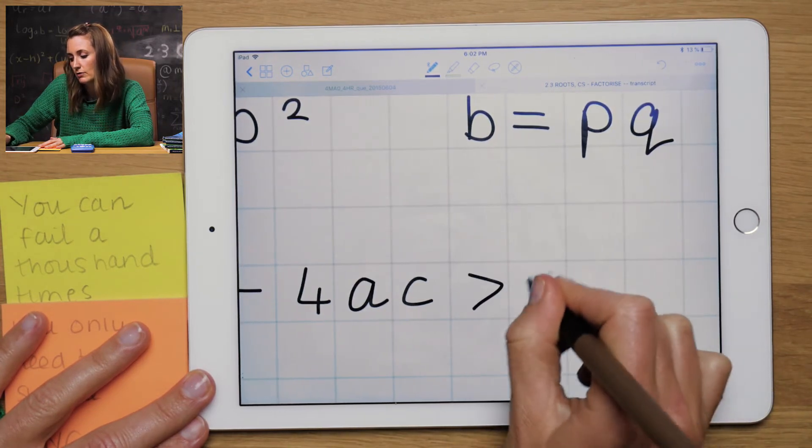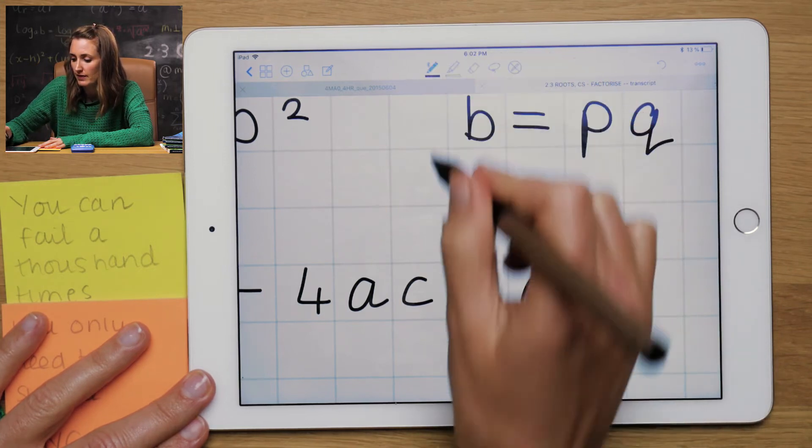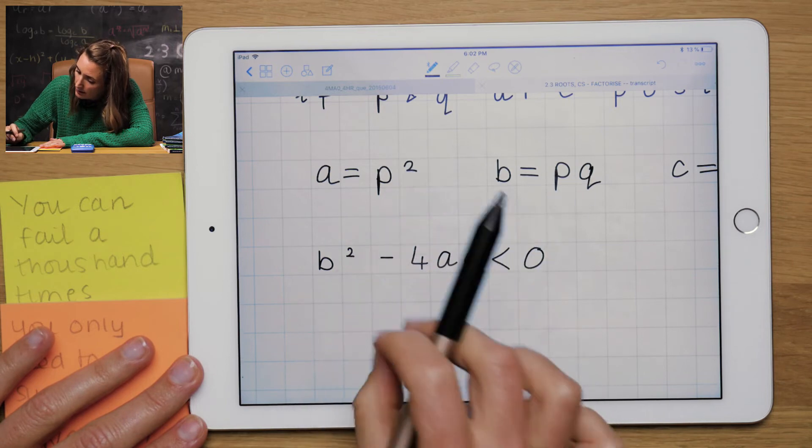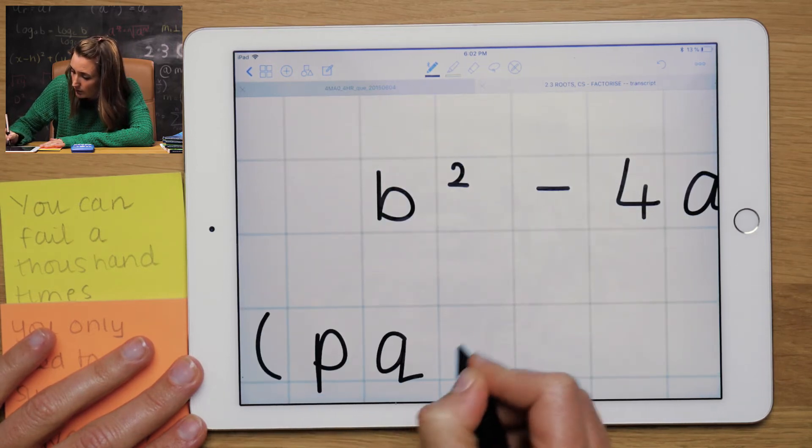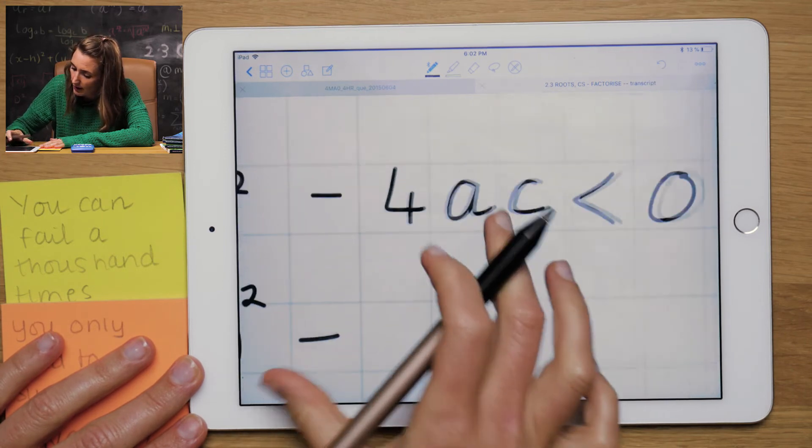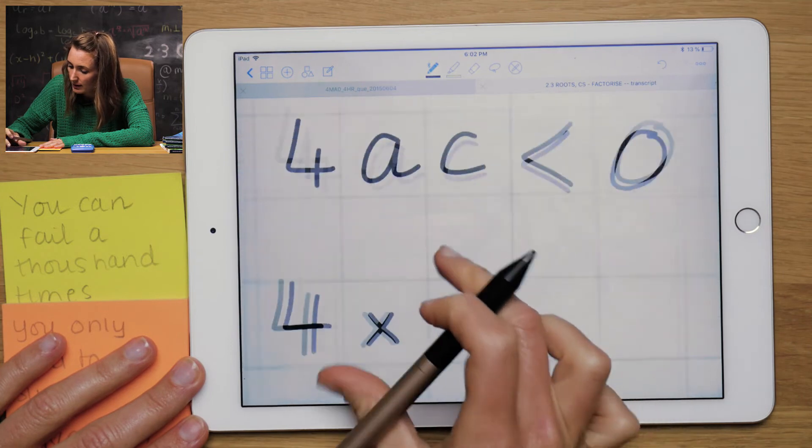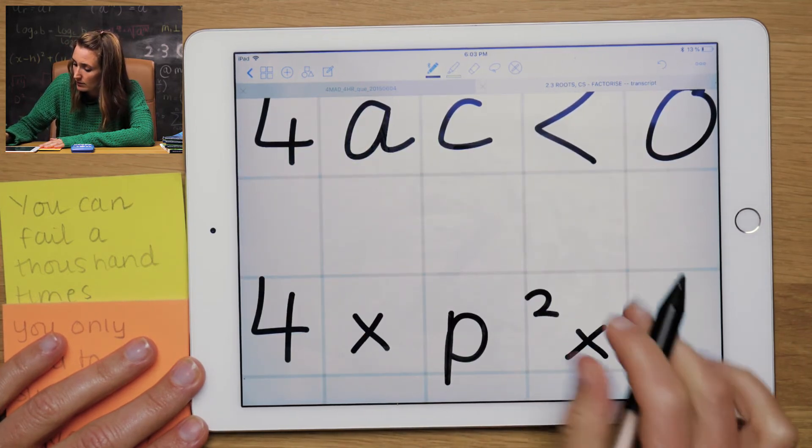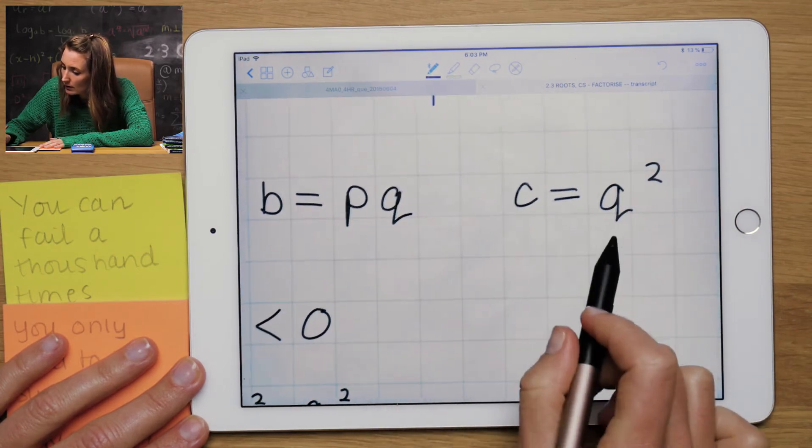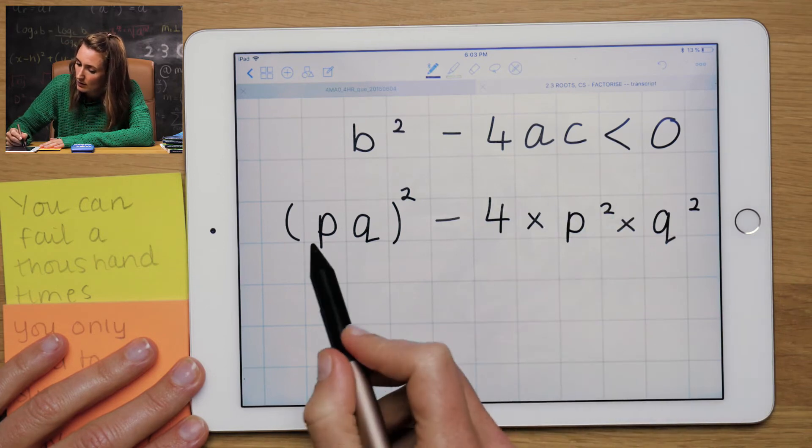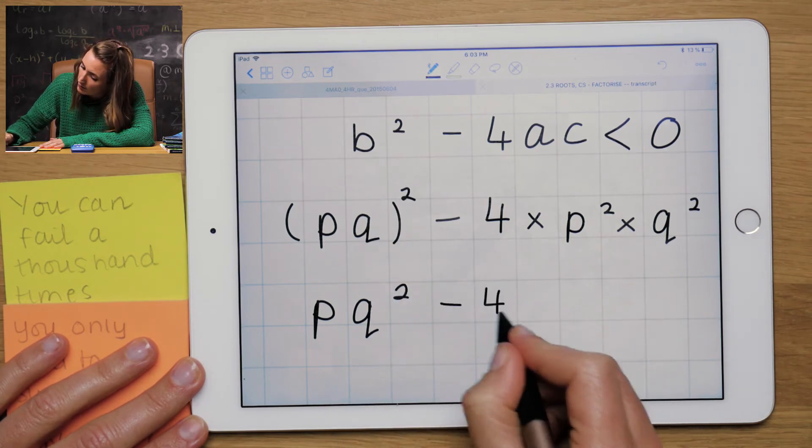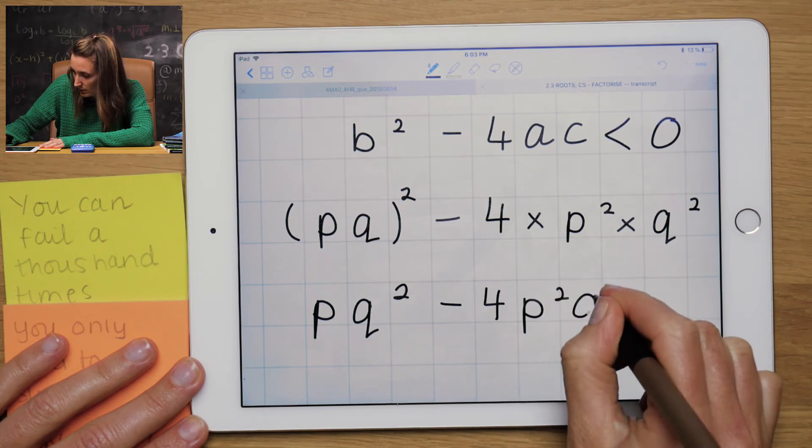This will be real roots, but they cannot have real roots. So we have to show that if they cannot have real roots, it has to be less than zero. So let's substitute everything in. b squared is pq squared minus 4 times a, 4 times p squared times c, which is q squared. So we want to show that's true in the end. So this will be pq squared. That squared will go on both of them.